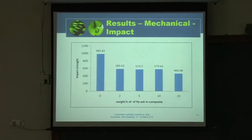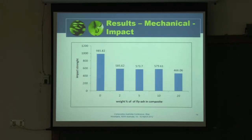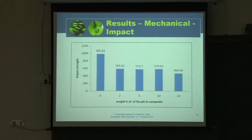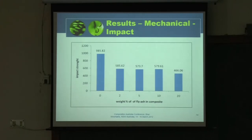The impact strength, when you put the fly ash in, seems to come down a bit — whereas in polypropylene, impact strength went up by about 25 to 30 percent. Here, impact strength comes down. However, the positive thing is that high density polyethylene has much higher impact strength than polypropylene. Even after it comes down by about 50 percent — from 985 to about 466 J/m — it is still quite acceptable.